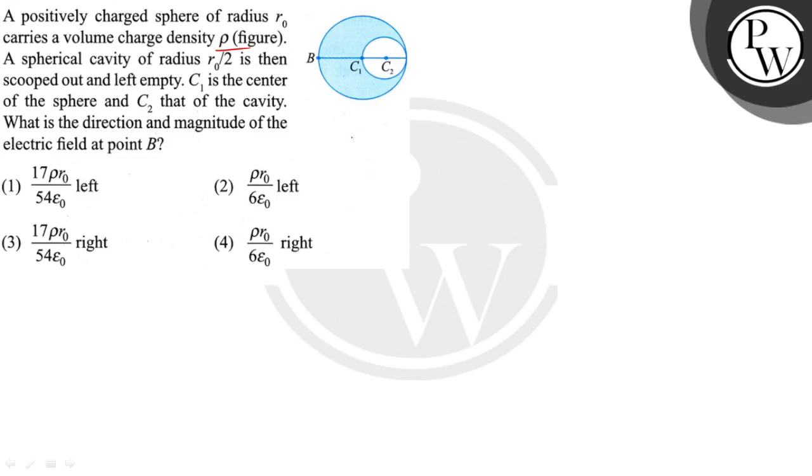The electric field on a uniformly charged sphere is given by E = ρr/(3ε₀). Electric field at an outside point is given by E = Q/(4πε₀r²) = ρr³/(3ε₀r²).